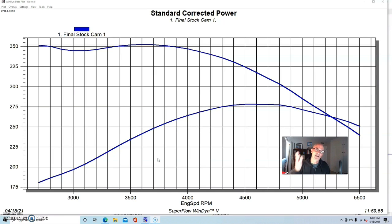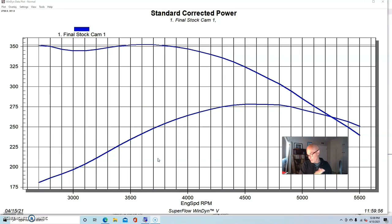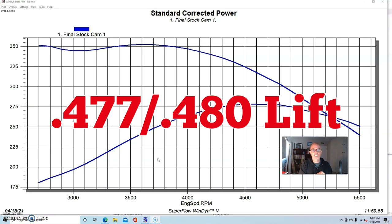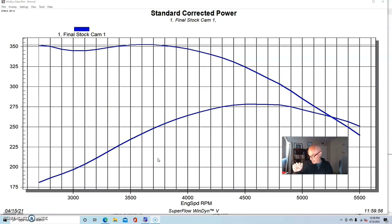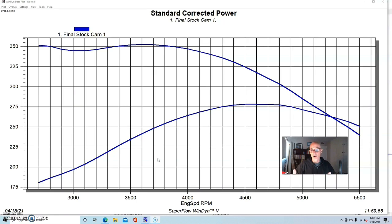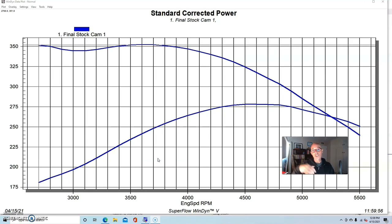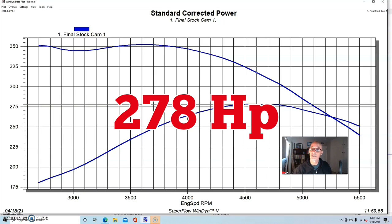The dual plane high rise intake manifold came from the guys at Speedmaster. We put a 650 XP carburetor on there, a set of 1 3/4 inch headers, and an MSD distributor. We ran it first with a stock camshaft - in fact, both of these motors were run with the same stock camshaft. This was a camshaft we got from a local auto parts store, your basic 180 to 190 horsepower stock truck small block Chevy camshaft. This combination produced 278 horsepower and 353 foot-pounds of torque.